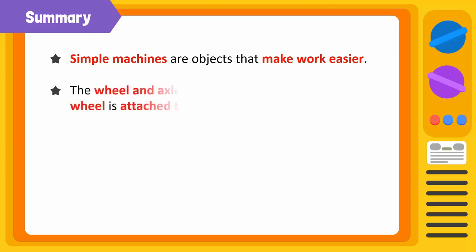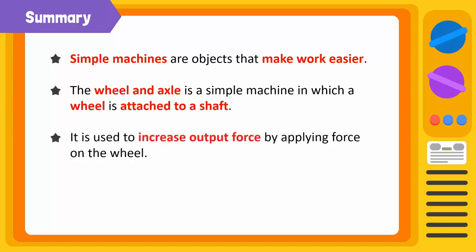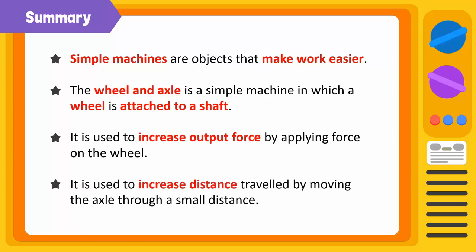Time to summarize! Simple machines are objects that make our work easier. The wheel and axle is a simple machine in which a wheel is attached to a shaft. The wheel and axle is used to increase output force by applying force on the wheel. This machine is also used to increase distance travelled by moving the axle through a small distance.